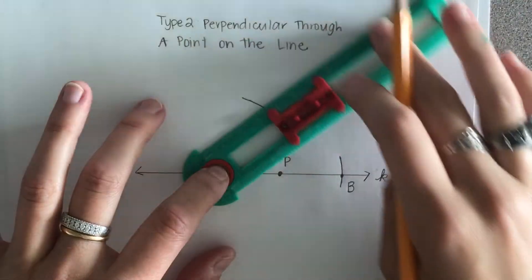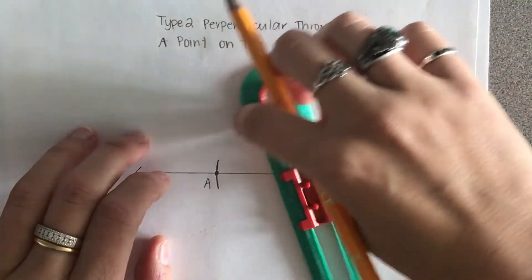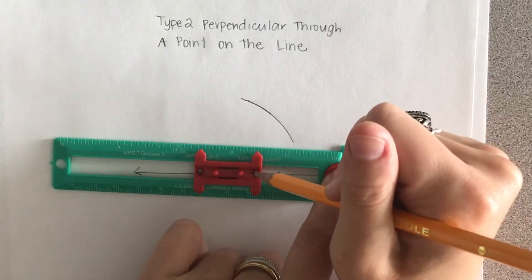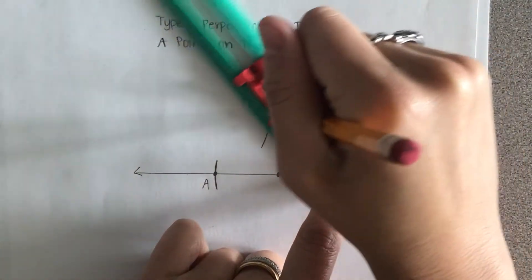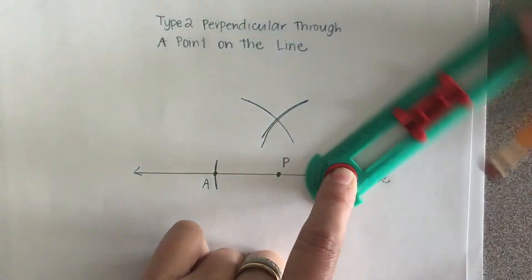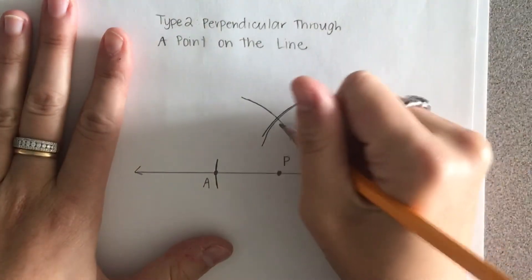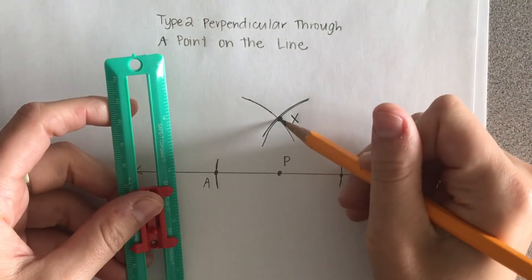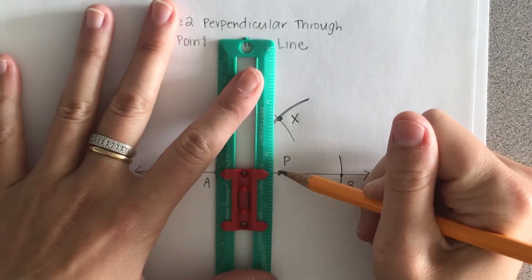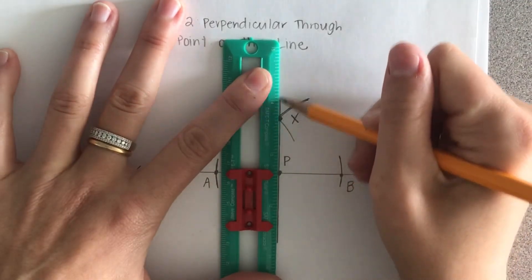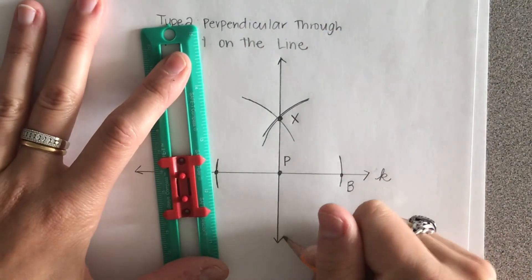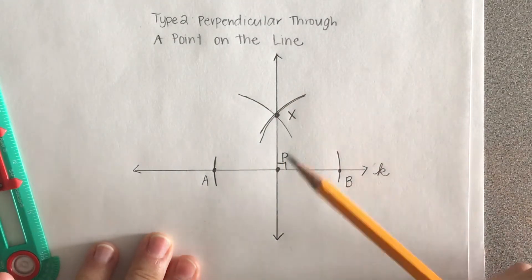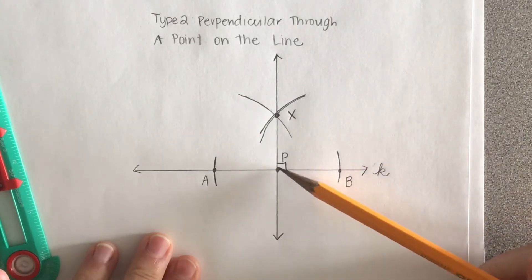Keeping that same arc without moving it, I'm now going to take the compass and turn it to the other side and put it on point B. I do the same thing on the other side and the two arcs should intersect. It's really important that you do not move the slide, because you want to keep the same radius each time. Where the two arcs intersect is point X. Using the straight edge, I take point X and connect it with point P, creating a line that is perpendicular — a 90-degree angle — to the given line, passing through point P.